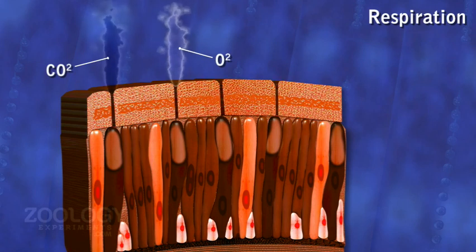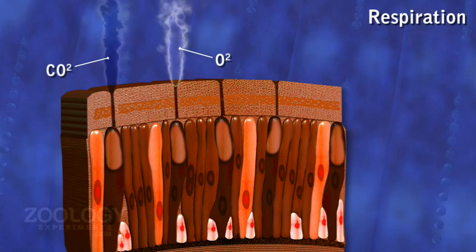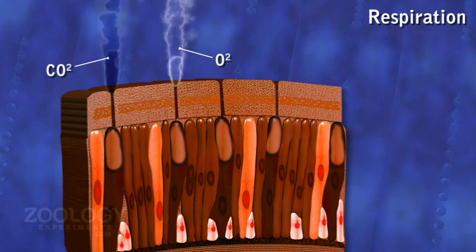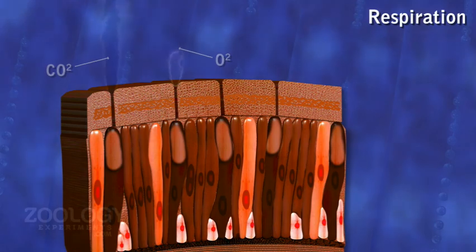Hemoglobin dissolved in the plasma of blood acts as a respiratory pigment, transporting O2 to the body tissues.